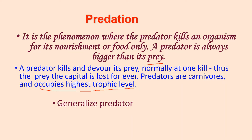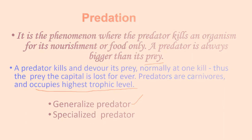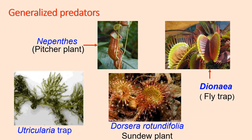Predators can be divided into generalized predators and specialized predators. In generalized predators, the prey is not specific — the predator feeds on a variety of food. Examples include insectivorous plants: Nepenthes (pitcher plant), Dionaea (the flytrap), Utricularia (bladderwort), and Drosera rotundifolia (sundew plant). In these cases, prey is not of a specific type. As for specialized predators, they feed on a particular type of prey. For example, Peregrine falcon feeds only on ducks and pigeons, and Hydra preys upon fish eggs only.